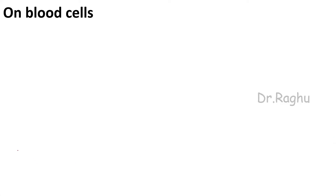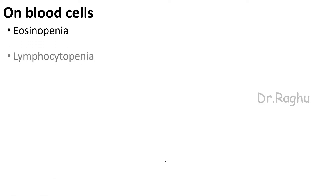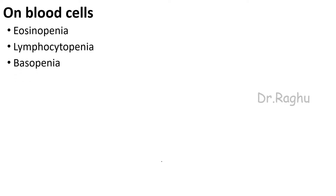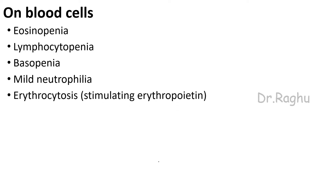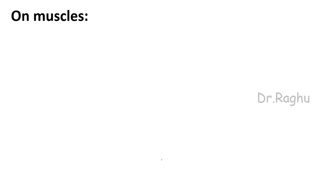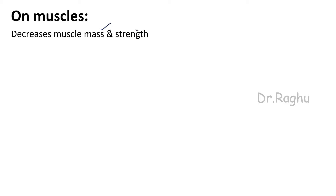On blood cells, cortisol causes eosinopenia, lymphocytopenia, and basopenia — meaning the cell counts of eosinophils, lymphocytes, and basophils are reduced. It causes mild neutrophilia, an increase in neutrophil count. There is also a little erythrocytosis because it stimulates erythropoietin hormone, and it results in an increase in platelet count called thrombocytosis. On muscles, because cortisol causes proteolysis and muscles require protein to function, there is a reduction in muscle mass and strength.